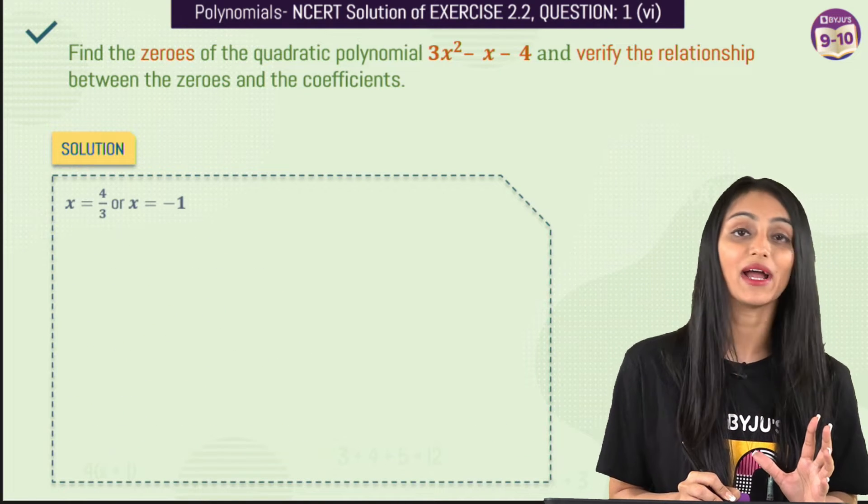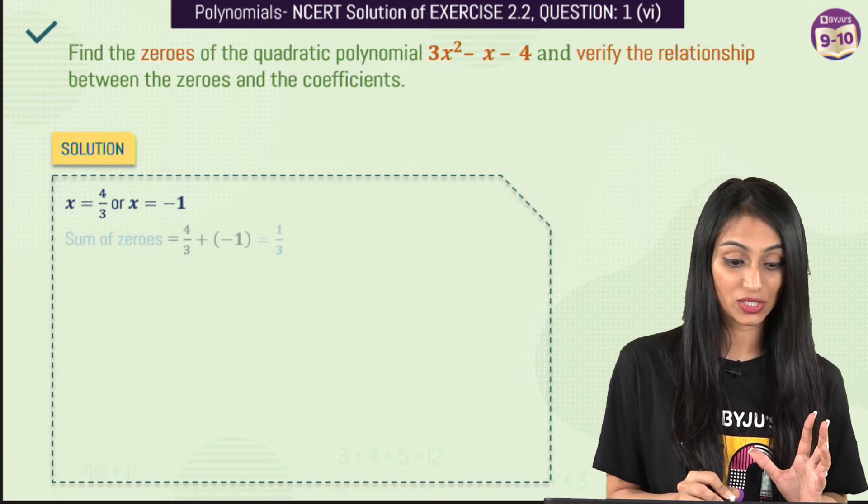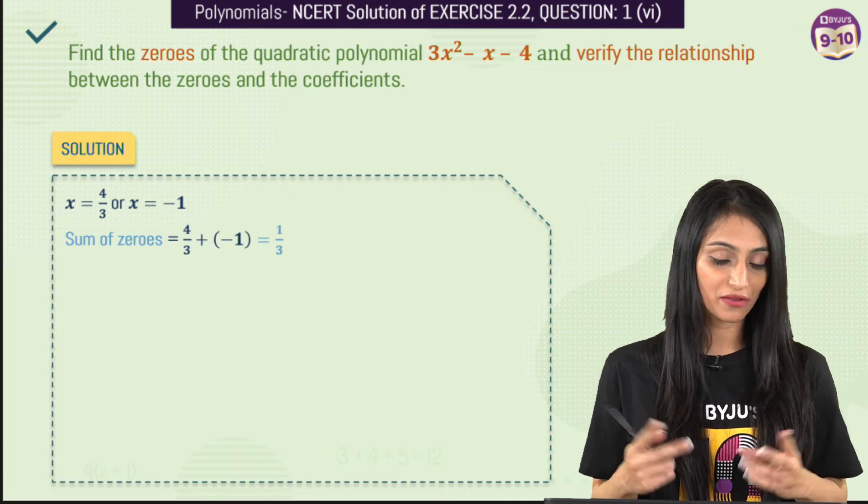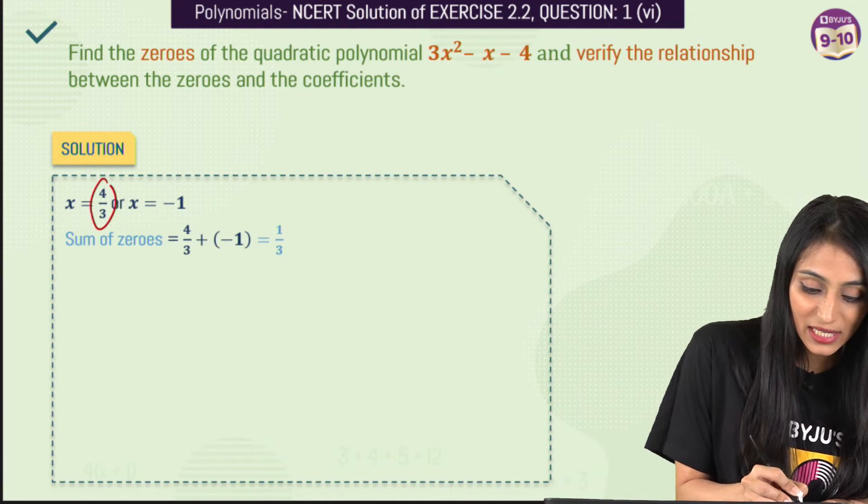Now in the second half we need to verify the relationship between the zeros and coefficients. So there are two relationships to verify this. The first is sum of zeros. So let's take the sum of these zeros first.